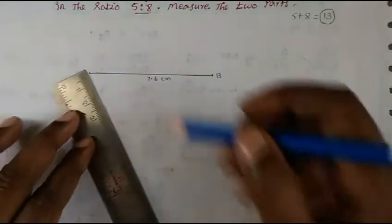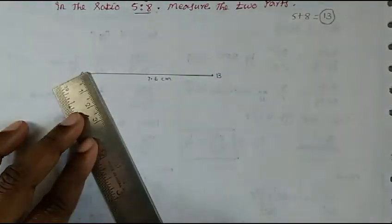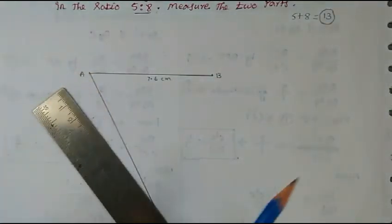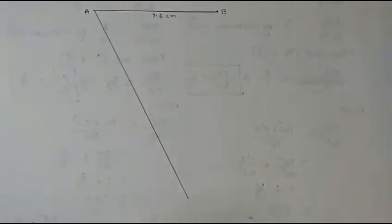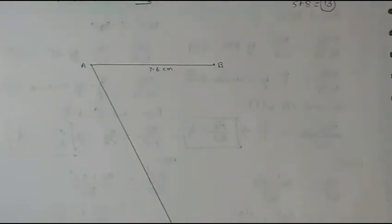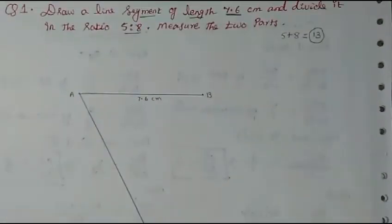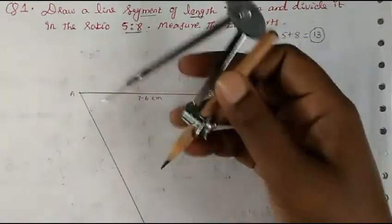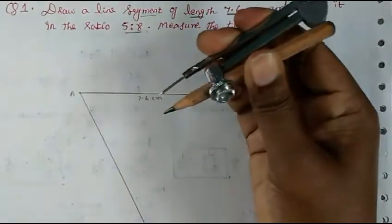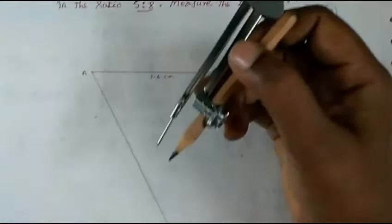Before that, we will draw a ray at an acute angle here. One ray of acute angle AX — we name it AX. Now we will divide this ray into a total of 13 parts. Take your compass, take any measurement, and we will divide this line into 13 parts.